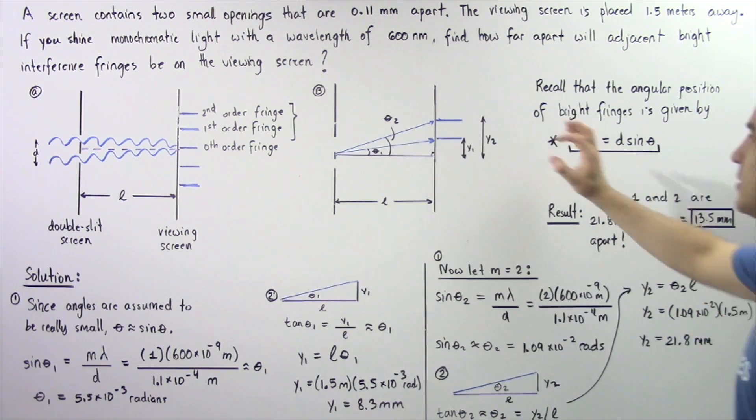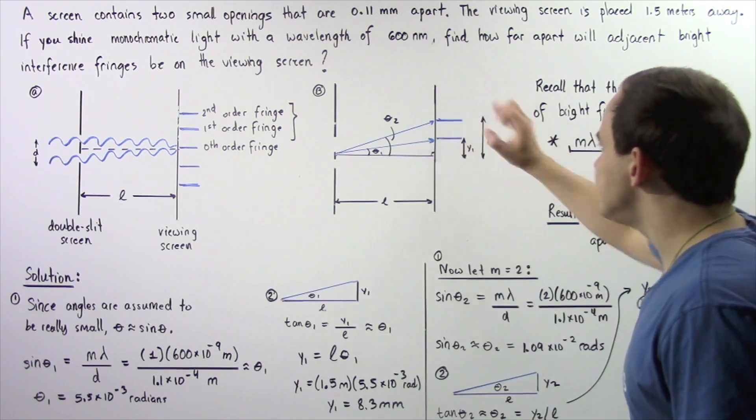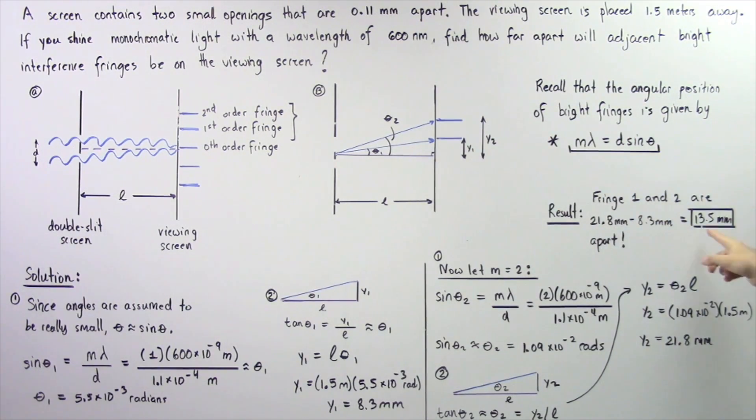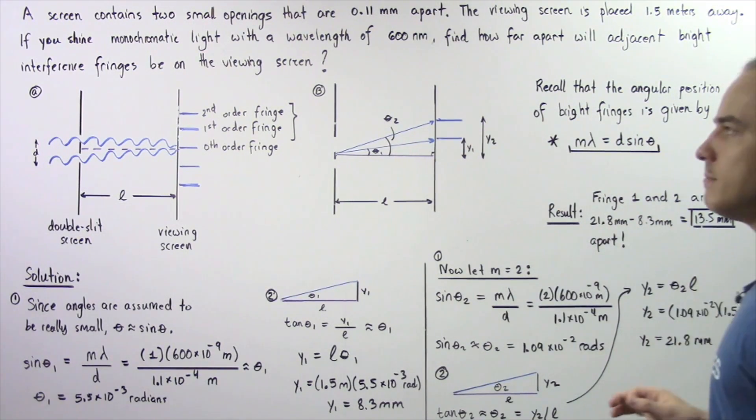So the distance between the first and second order fringes is about 13.5 millimeters.